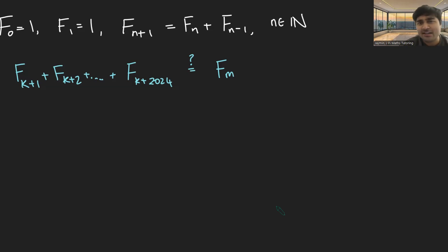This problem is all to do with the Fibonacci numbers. We want to know, is it possible to find 2024 consecutive Fibonacci numbers that add up to some other Fibonacci number? The answer is no. Let's see why.